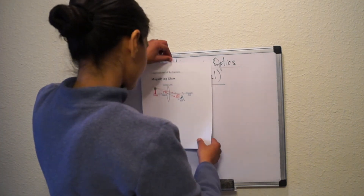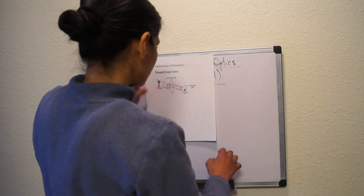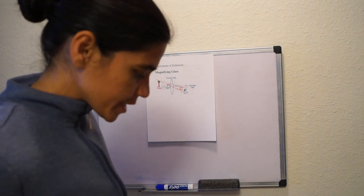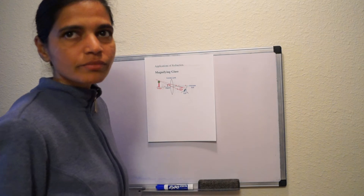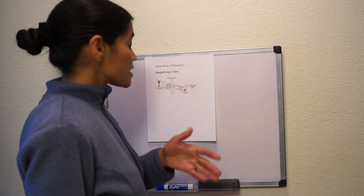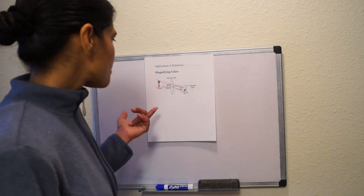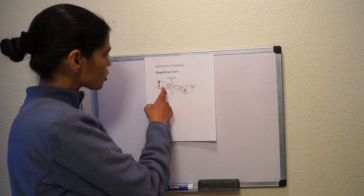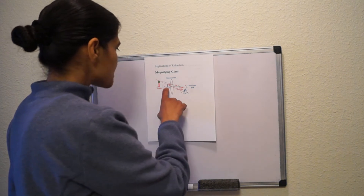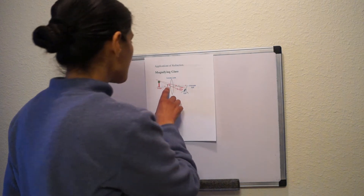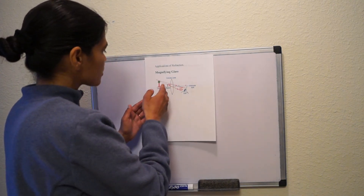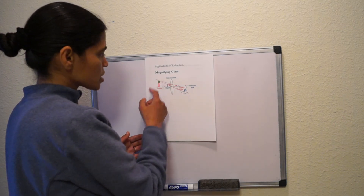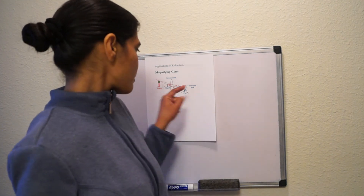Another application of the light ray model is the magnifying glass. How does it work? You use a converging convex lens, and the object is placed in between the focal point and the converging lens. The image is formed all the way over here — about twice the focal length away. This is an upright but virtual image, and the eye sees this virtual image. Magnifying glass is an application of refraction of light.